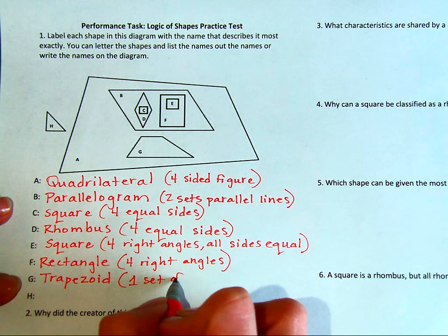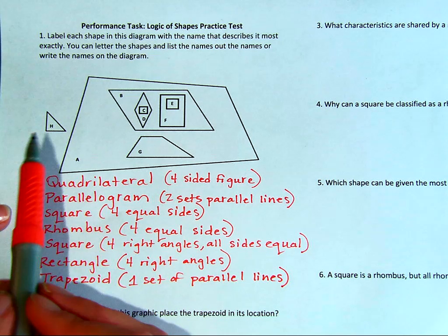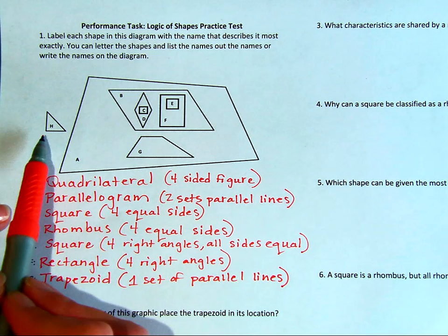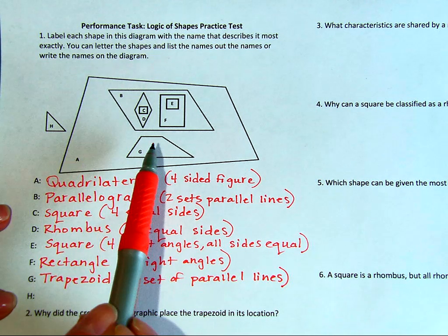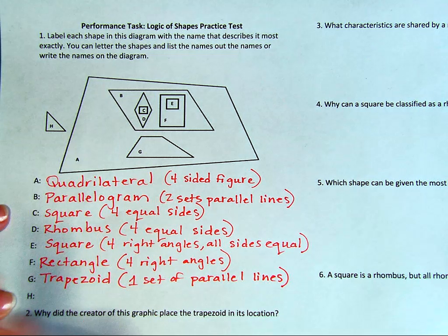Finally we have figure H. I notice that all of the shapes housed within figure A have four sides, but figure H only has three sides. And three-sided figures are called triangles.